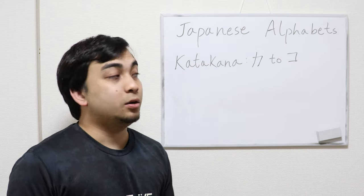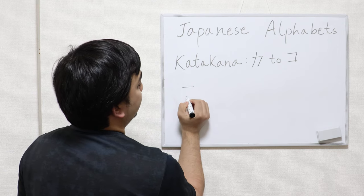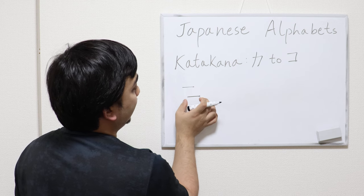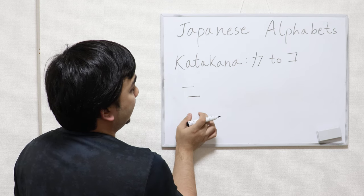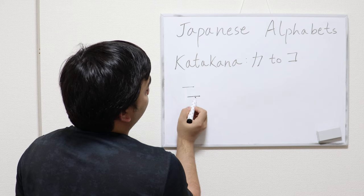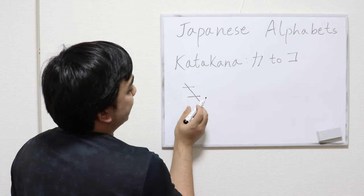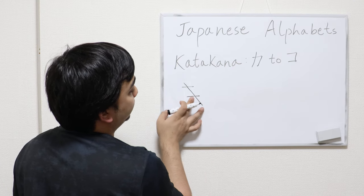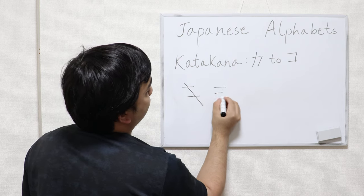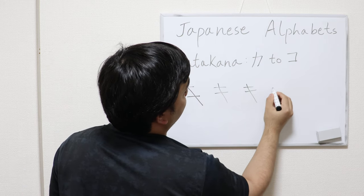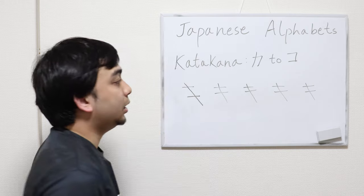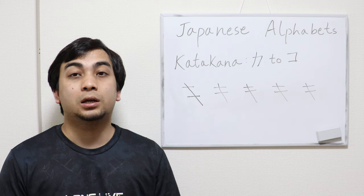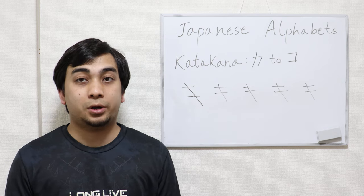Next is ki. Ki is simple too. What you're going to do is write down two horizontal lines — the bottom one is shifted a bit to the right — and cross those two at the middle with a slanted line. Remember, the bottom half of the slanted line should be longer than the top half. That's your ki. Write ki five to ten times, and pronounce it as you write.